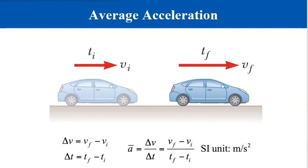When you are driving your car, it is rare that you travel long distances at constant velocity. The velocity of the car increases when you step harder on the gas pedal and decreases when you apply the brakes. The velocity also changes when you round a curve, changing your direction of motion. The changing of an object's velocity with time is called acceleration.